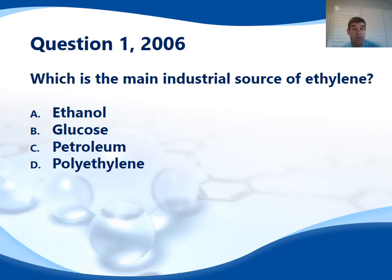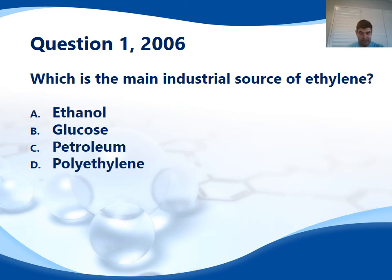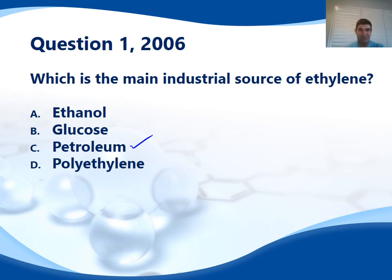A quick question from 2006: the first question was, what is the main industrial source of ethylene? And hopefully the answer is obvious — petroleum. Thanks for watching.